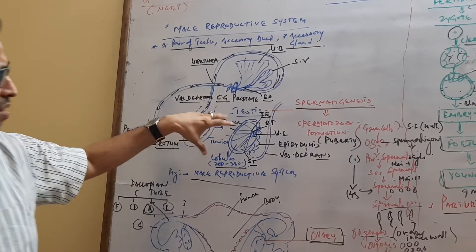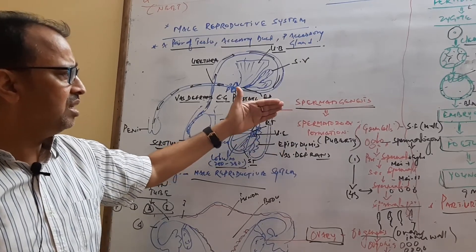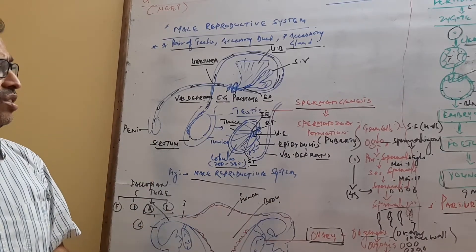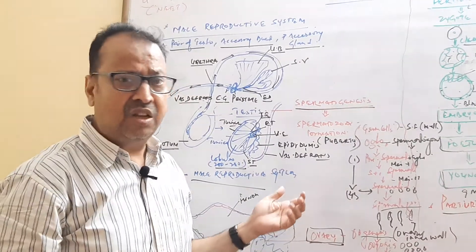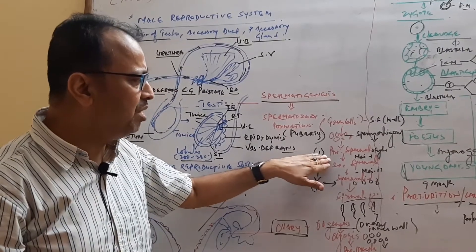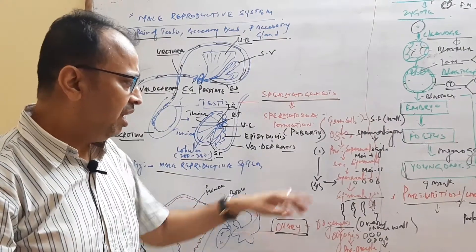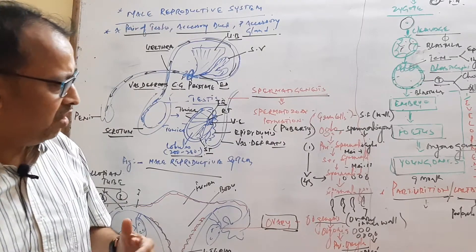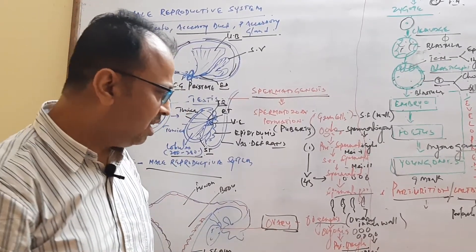Inside the seminiferous tubule, spermatogenesis takes place. On the wall of the seminiferous tubule, many germ cells divide mitotically to produce many cells called spermatogonia. Each spermatogonium develops into primary spermatocyte. Then meiosis takes place to form secondary spermatocytes and spermatids, which differentiate morphologically to produce spermatozoa. Spermatozoa are motile structures having tails.